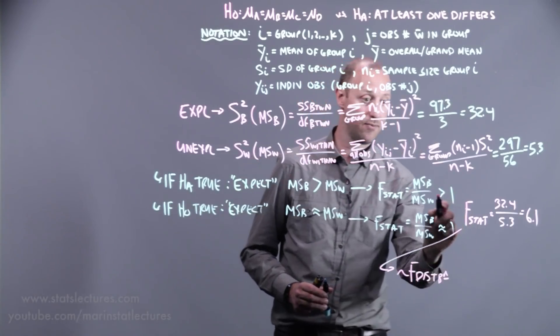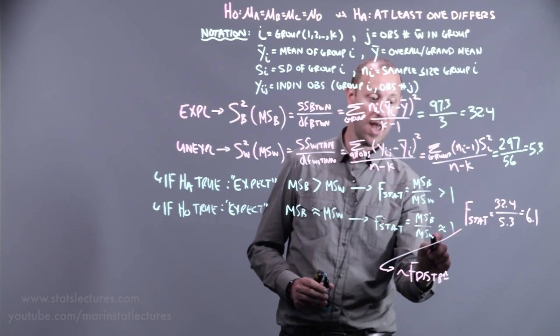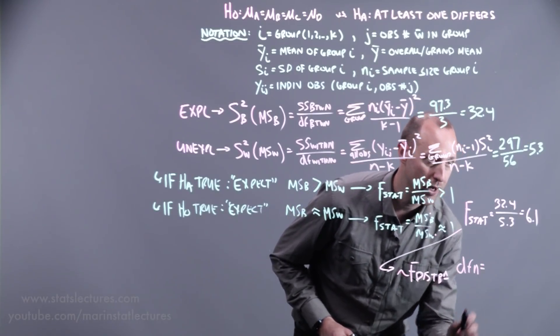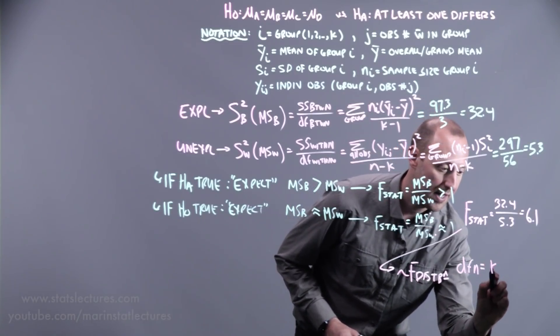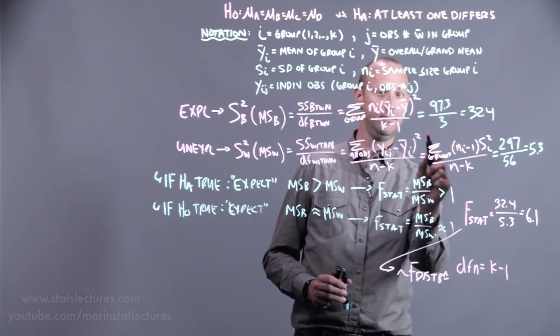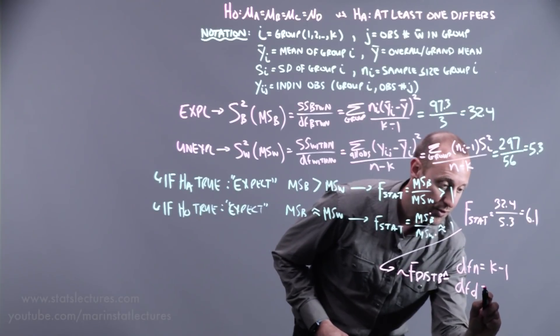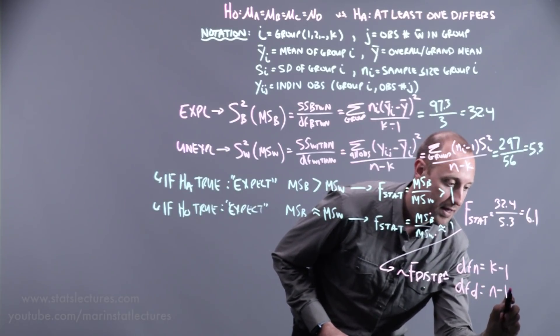It has degrees of freedom for the numerator and degrees of freedom for the denominator. So it has degrees of freedom for the numerator, which are k minus 1, those are the degrees of freedom of what's in the numerator. And it has degrees of freedom for the denominator, n minus k.